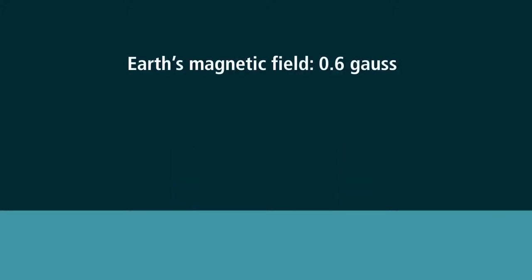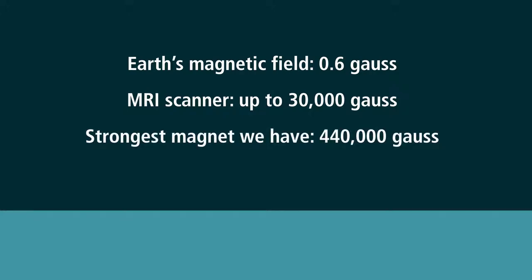Earth's magnetic field is around 0.6 gauss, an MRI scanner can be up to 30,000 gauss. I've been to an MRI examination, and I don't recall gravity being suspended. Not even the most powerful electromagnet we have, at 440,000 gauss, seems to pose any problem for gravity. I'm sorry, but if you subscribe to this nonsense you simply haven't been thinking this through.